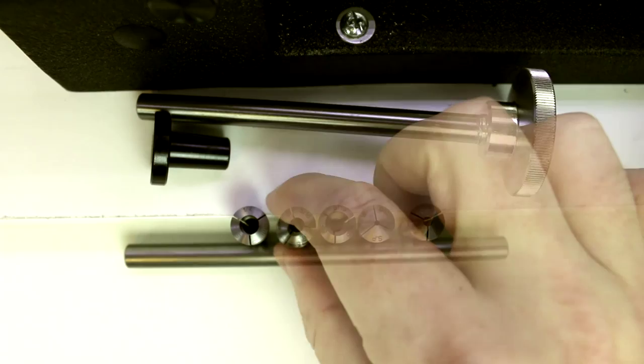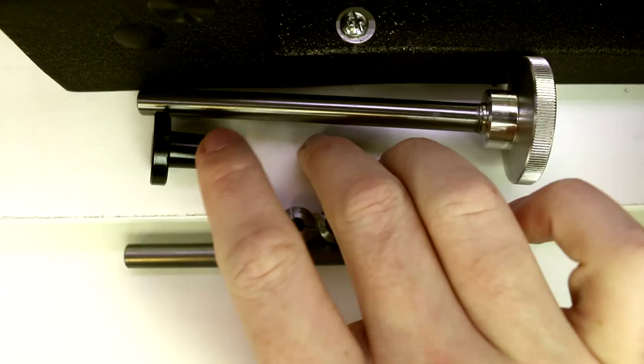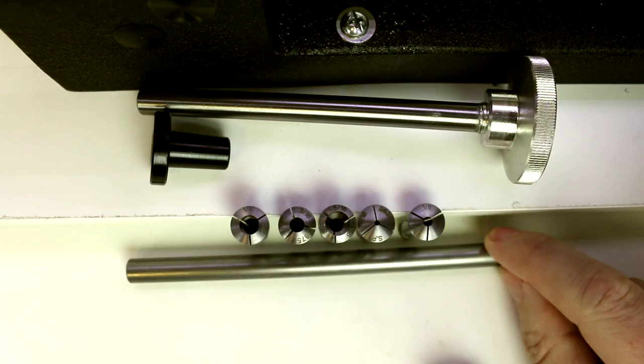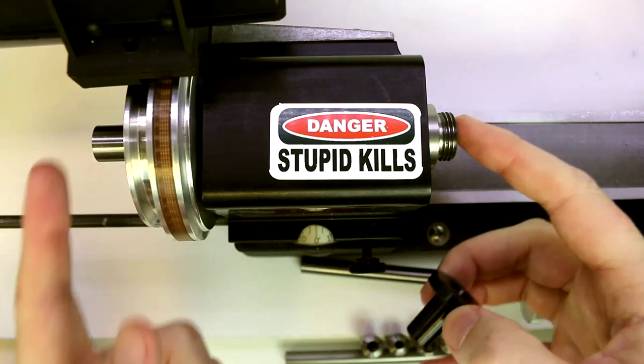So this set includes five collets, a draw bar, this is a collet adapter or collet chuck if you will, and they do include a knockout bar. This is something I wish was included in the basic lathe package, but you do get a knockout bar in this package if you choose to purchase it.